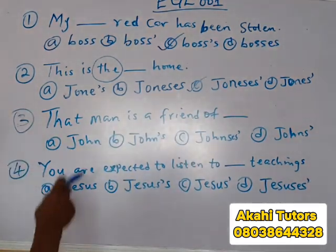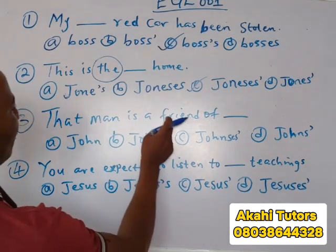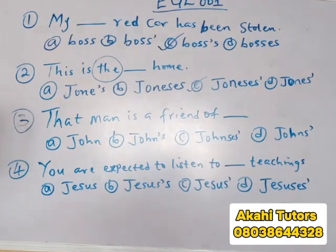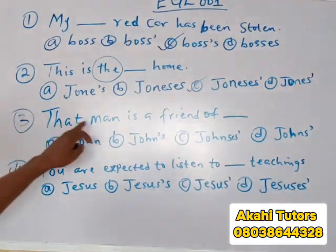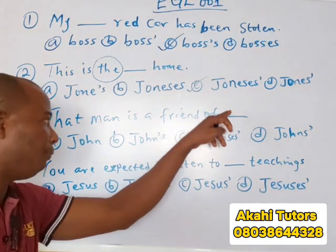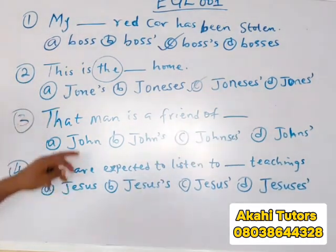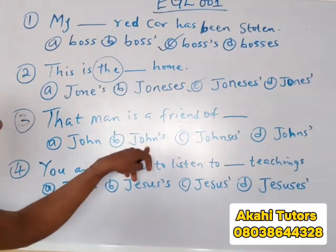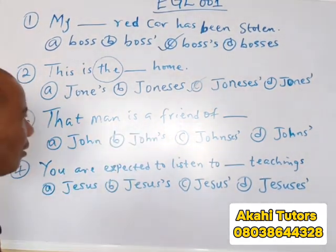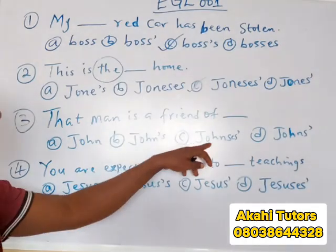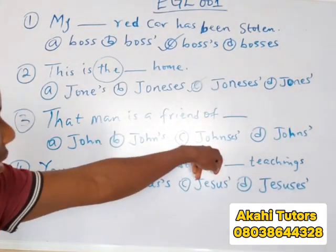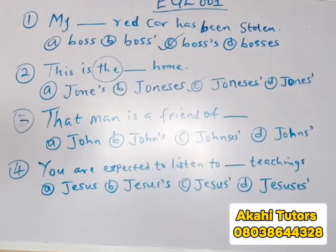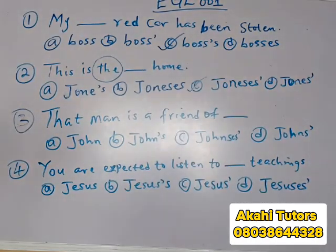Question three: that man is a friend of blank. The options include: is a friend of John, is a friend of John's, and variations of those. What is our answer here?